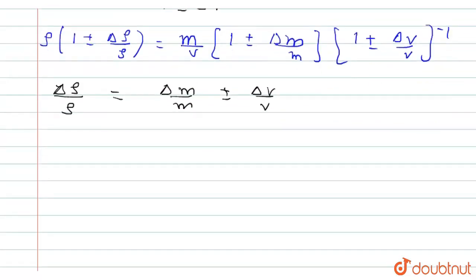In this part we substitute V is equal to 4 by 3 pi r cubed. If we substitute V is equal to 4 by 3 pi r cubed, then del V by V is equal to 3 del R by R.